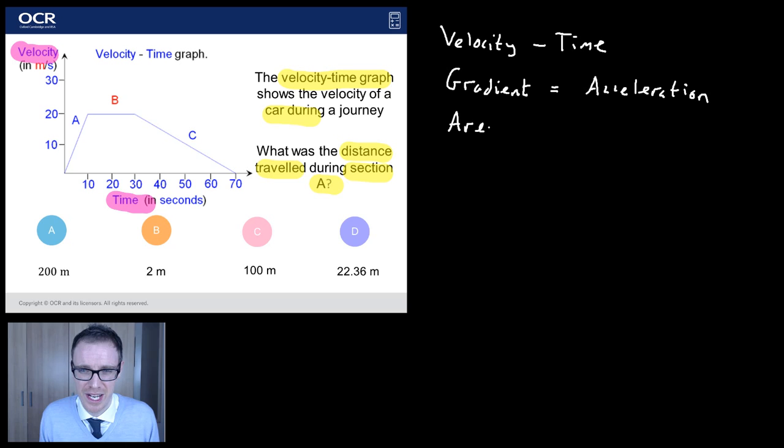But there's another thing we need and this is going to be more useful for us for this question. The area underneath a velocity time graph tells us the distance that has been travelled. There we go. Apologies for my dodgy writing. That's actually not too bad.